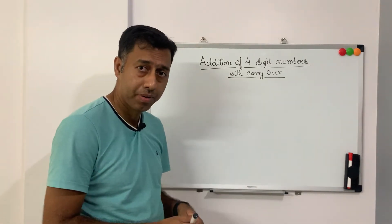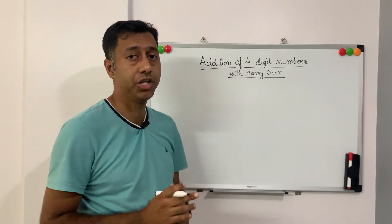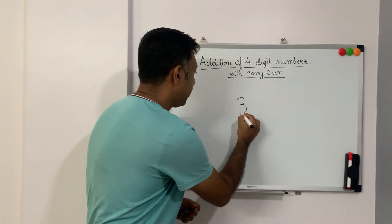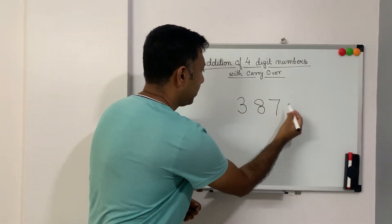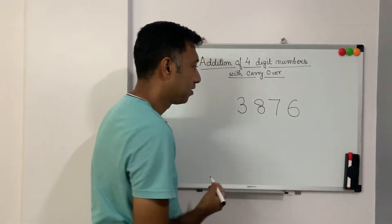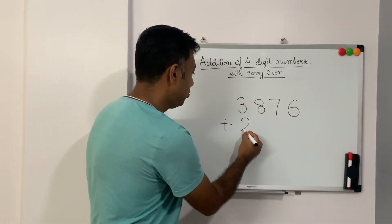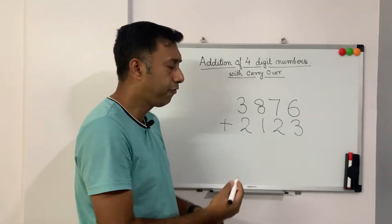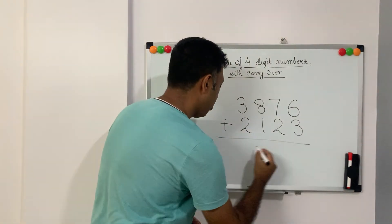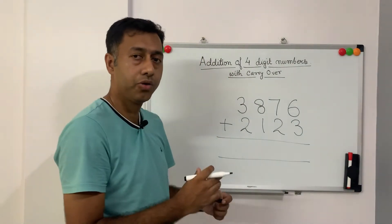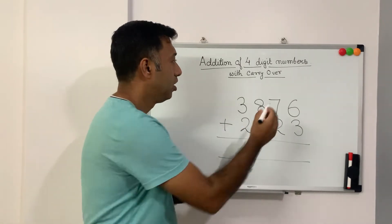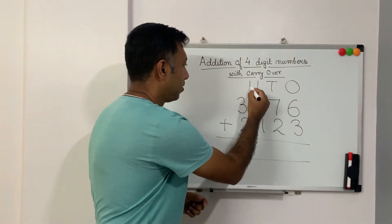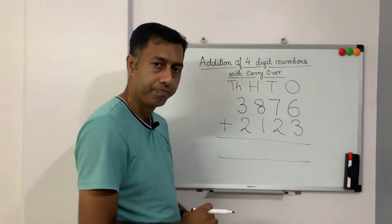So let's quickly recap about what we know already about addition of four digit numbers. So let's say we have the number as 3876 plus 2123. So if we have to add these two numbers, first what are we going to do? We are going to put them in their respective houses, like ones, tens, hundreds and thousands. Correct?